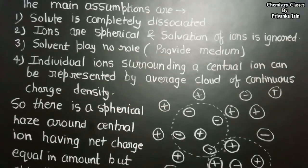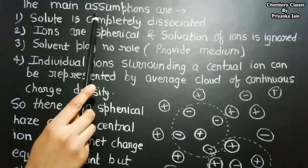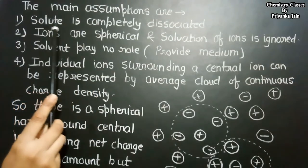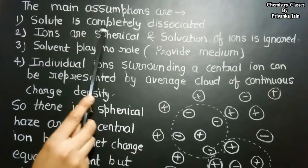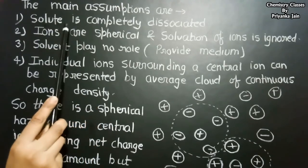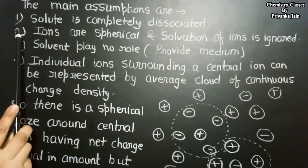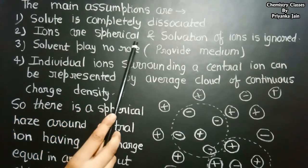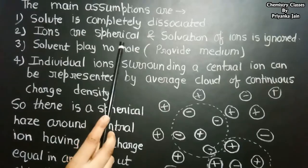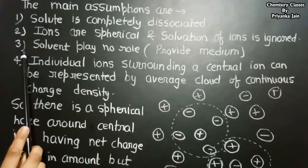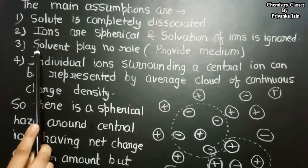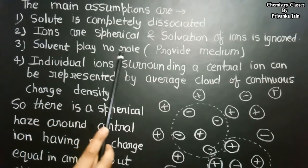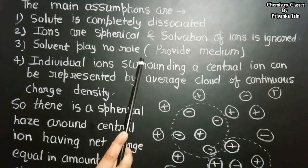Now we look at the main assumptions of the Debye-Hückel theory. The first assumption is that the solute is completely dissociated — meaning the electrolyte is strong. The second point is that the ions are spherical and solvation of ions is ignored. The third point is that the solvent plays no role — it provides only a medium for the ions.